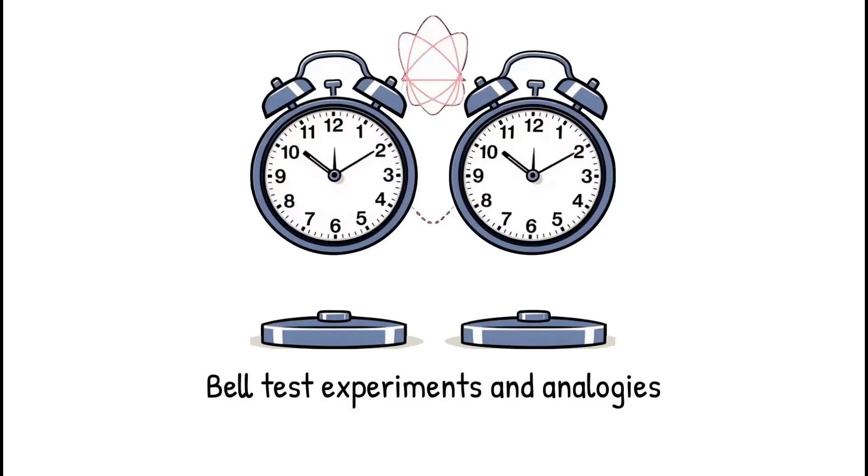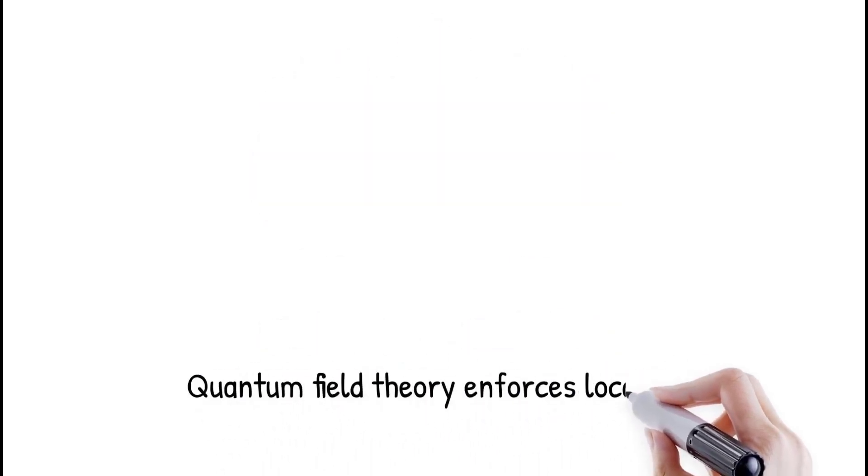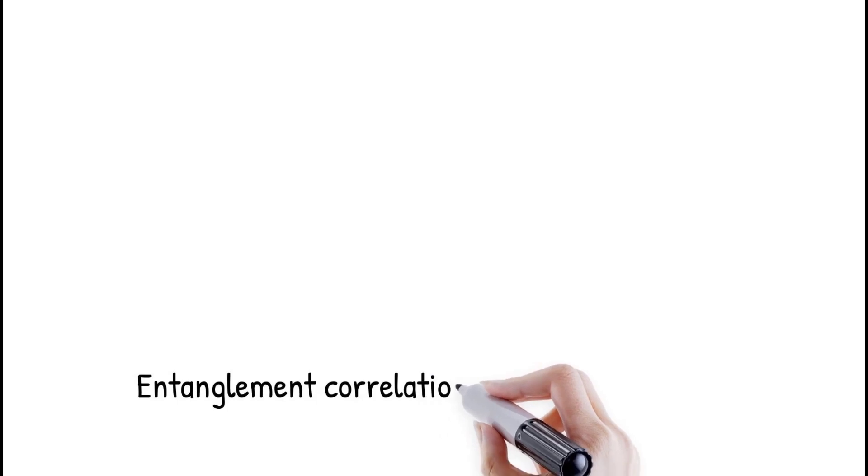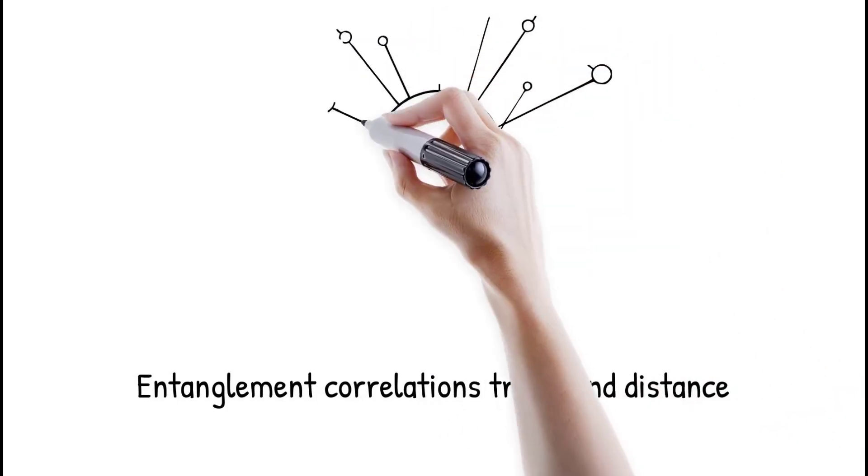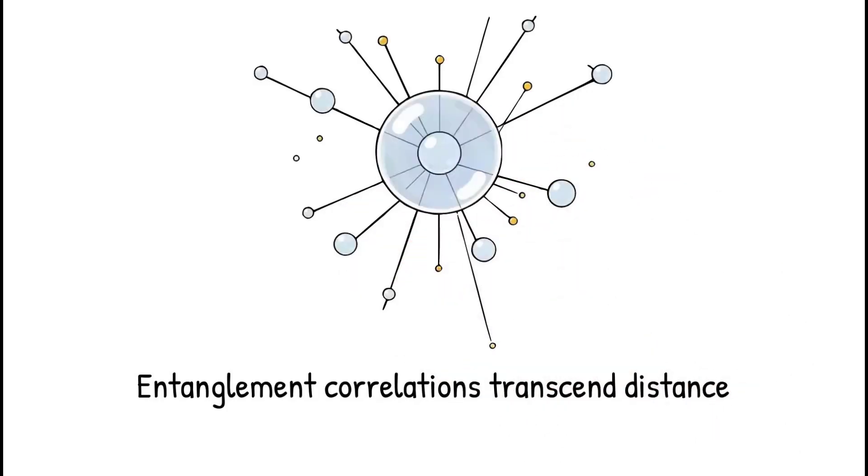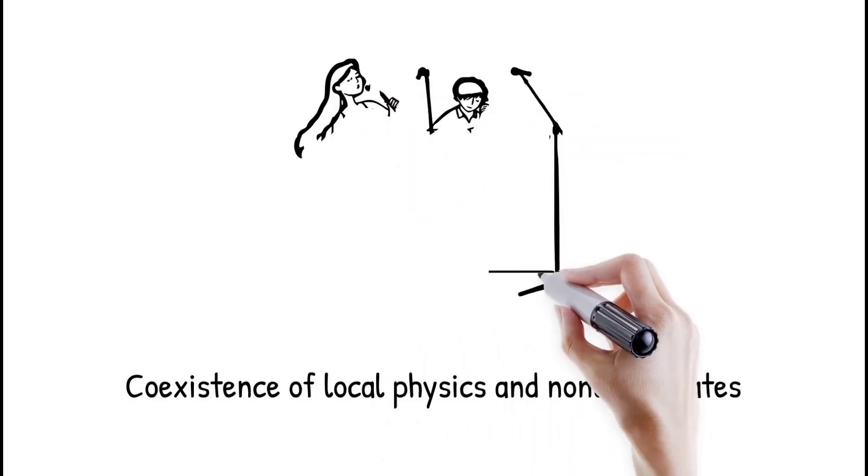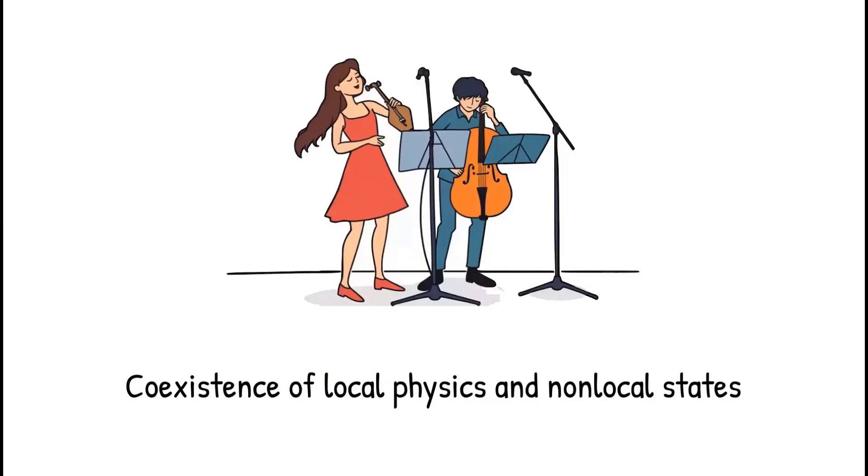Quantum field theory still enforces locality in how fields interact. Particles influence each other through field excitations that propagate at finite speeds. Yet entanglement correlations emerge within this framework, as though encoded into the shared quantum state. Local signals are preserved, but global correlations transcend distance. This dual picture makes entanglement consistent with relativity, yet non-local in effect. Local physics and non-local states coexist uneasily. Quantum electrodynamics describes photons propagating locally, but entanglement correlations extend instantly across space. It is like playing a duet where each musician hears only their notes locally, yet the harmony exists across the stage instantly.